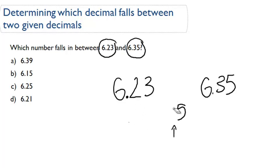So we're going to try the next number. So 6.39 and 6.15 were not viable options. Now, 6.25, is 6.25 greater than 6.23? Yes, it is. Is it less than 6.35?